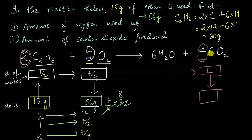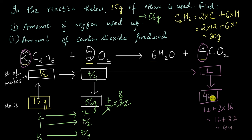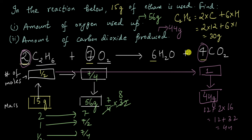One mole of carbon dioxide has a mass of 12 for one carbon atom plus 2 × 16 for two oxygen atoms, giving 12 + 32 = 44 grams. So 44 grams of carbon dioxide must have been produced in this reaction. By converting mass into number of moles and using the ratio of stoichiometric coefficients, you can find the amount of product produced or the amount of reactant used.